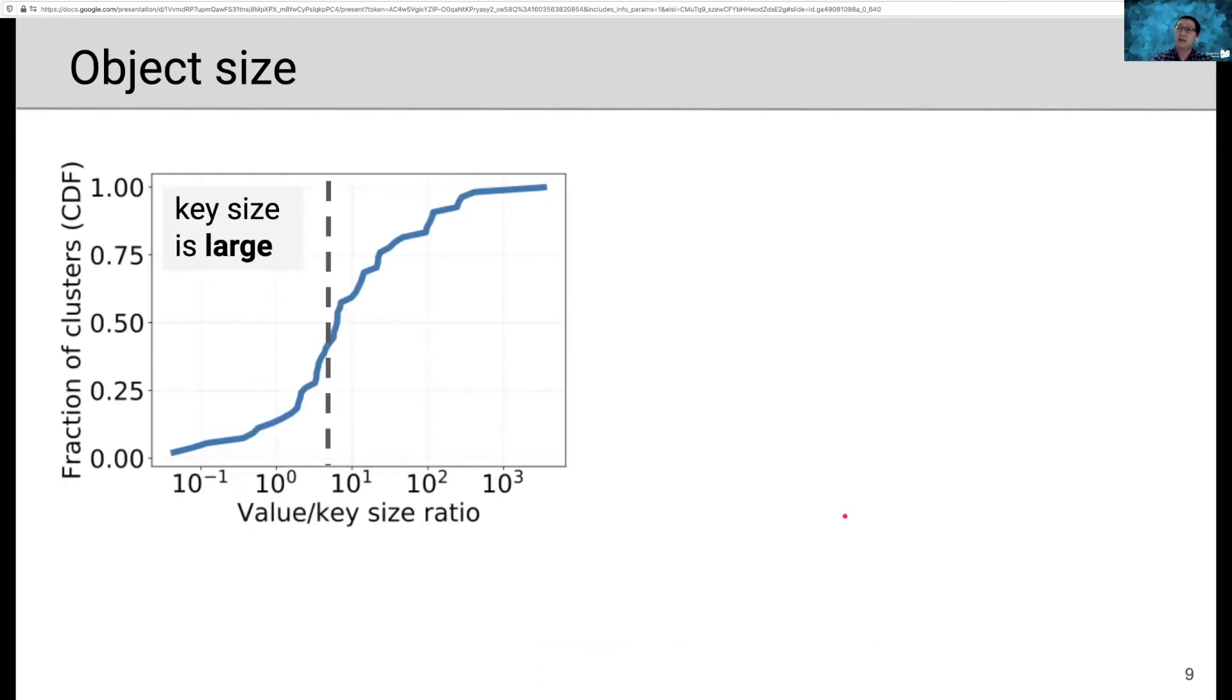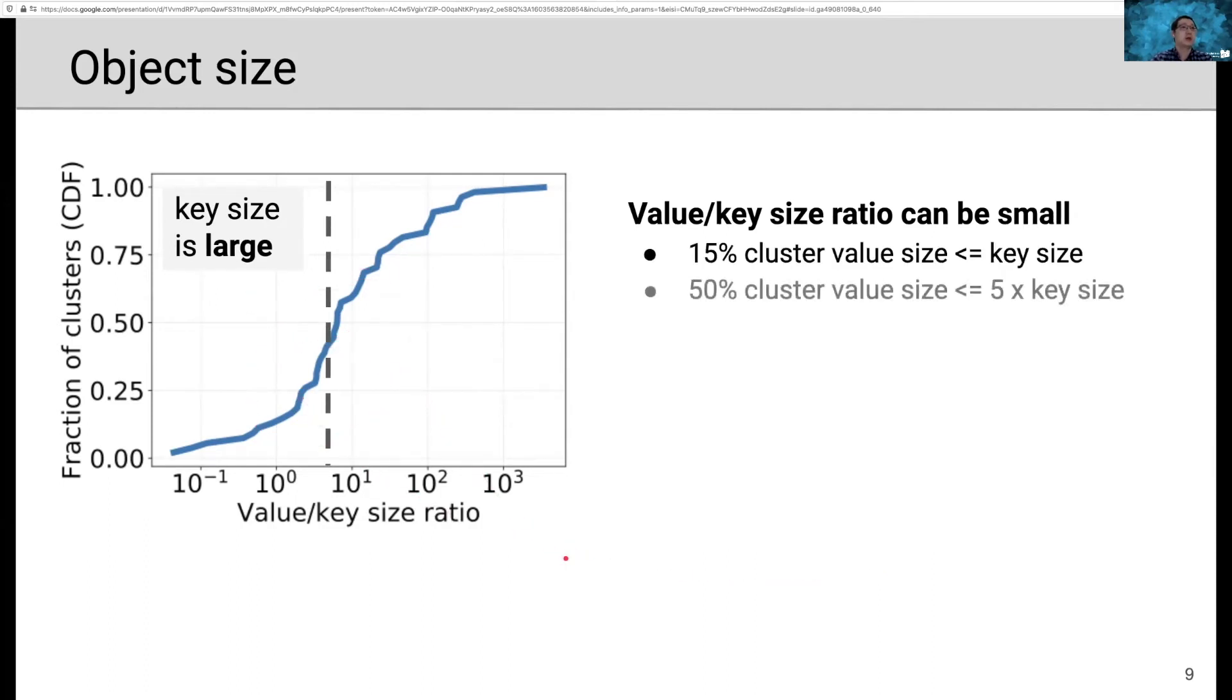When object size is small, it's often the case that value size is small. Therefore, we characterize value over key size ratio across clusters. And we show it in this figure. We observe that 15% of the clusters have value size less than or equal to key size, while 50% of the cluster have value size less than or equal to 5 times key size. In other words, key size is large.